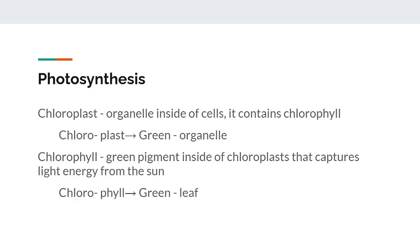Inside chloroplasts is a pigment called chlorophyll, which is responsible for capturing the light energy from the sun. Chlorophyll is green, so it is responsible for the green color of leaves for the majority of their lifespan. When leaves begin to change color, they stop producing chlorophyll, which slowly reveals the true colors of the leaves as yellows, oranges, and reds. It also follows that a leaf's capability to perform photosynthesis decreases as it loses its green color, since it is losing the pigment that captures the energy for photosynthesis to take place.